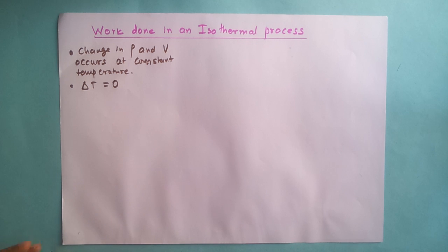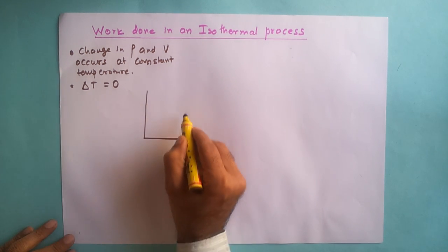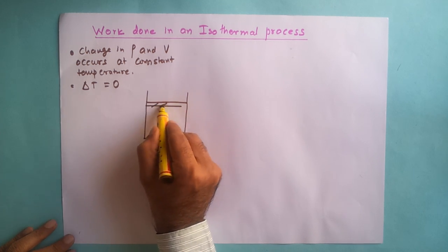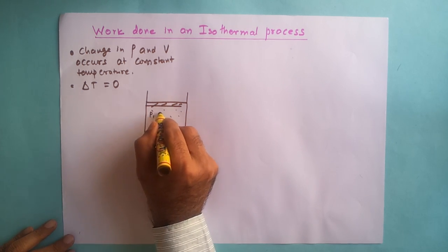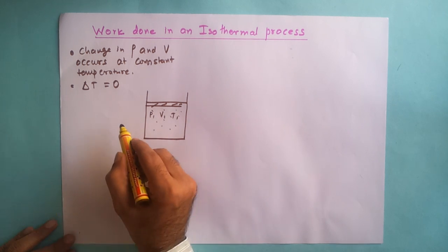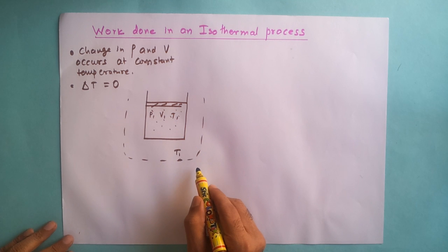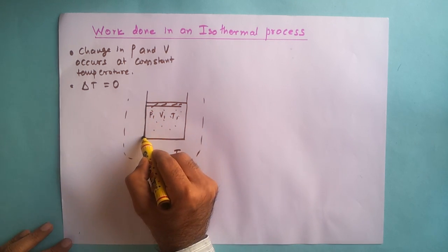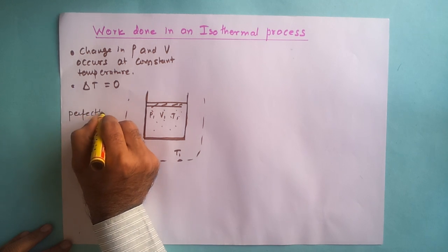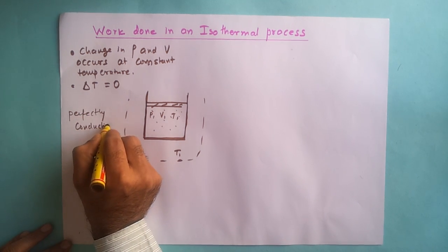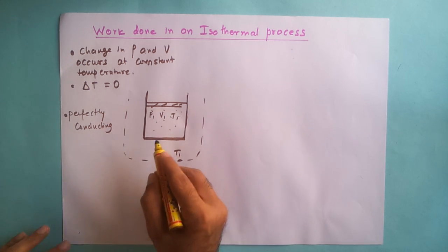Let us look at how this process is possible — what needs to happen for temperature to remain constant. We take the example of a piston-cylinder arrangement with an ideal gas inside. This ideal gas is at pressure P1, volume V1, and temperature T1. The cylinder is surrounded by a medium also at temperature T1, and the walls of the piston are perfectly conducting in nature.